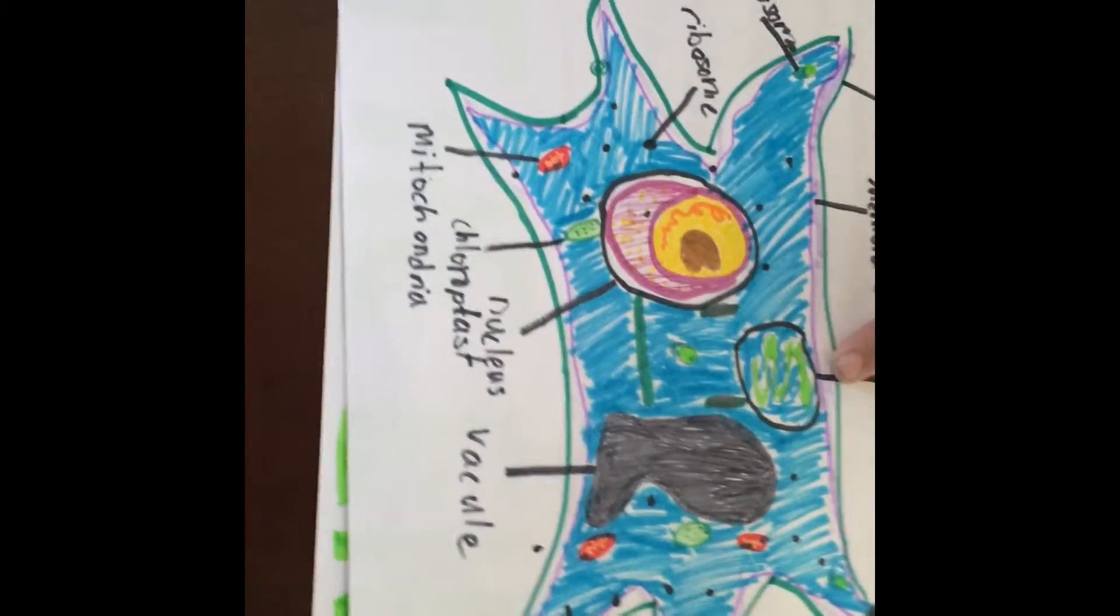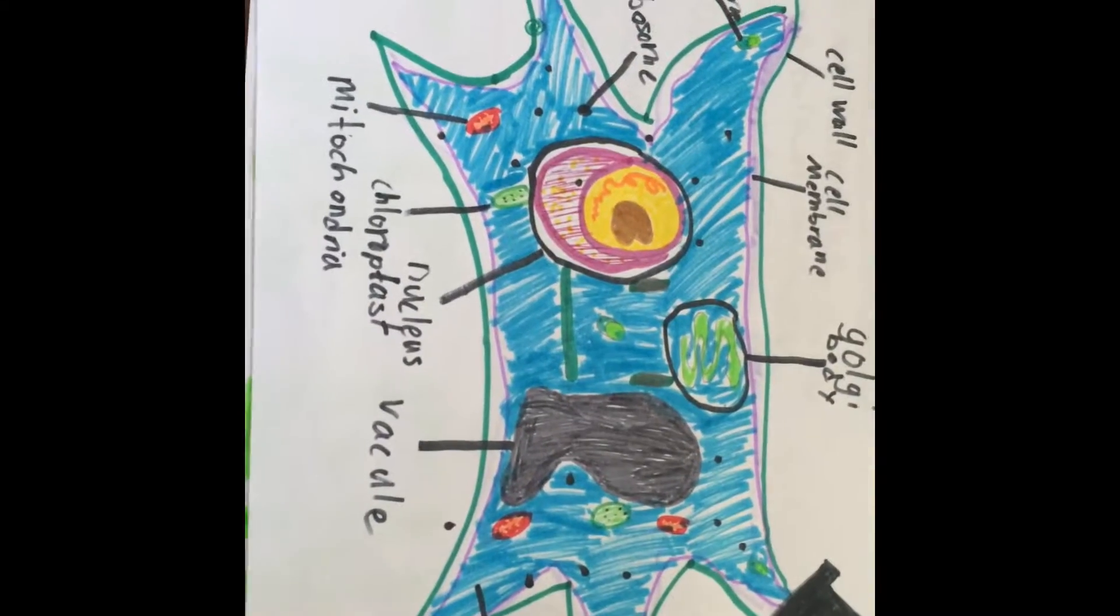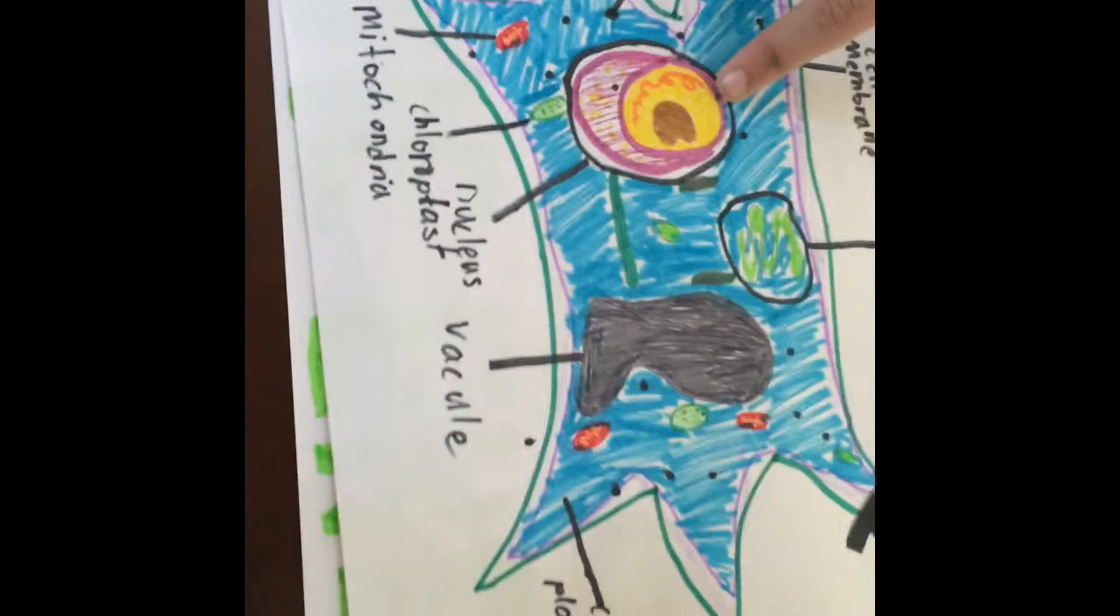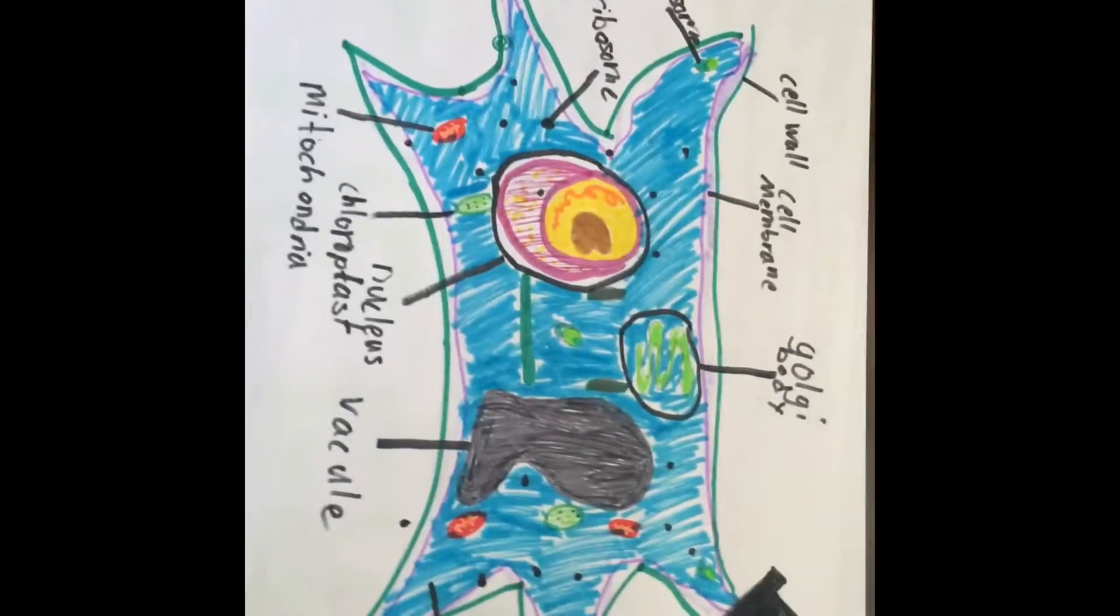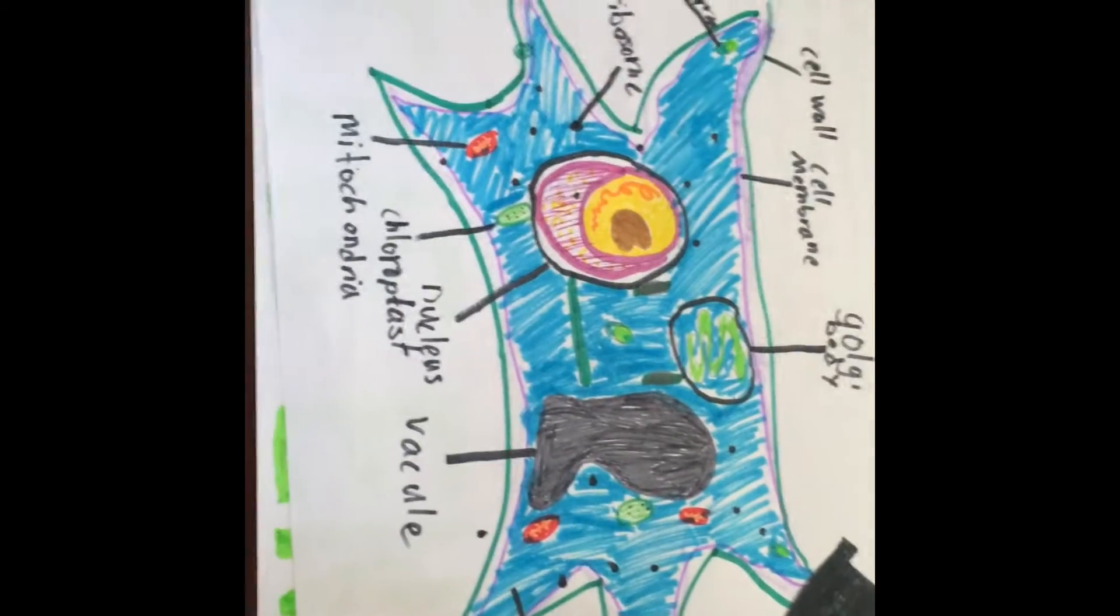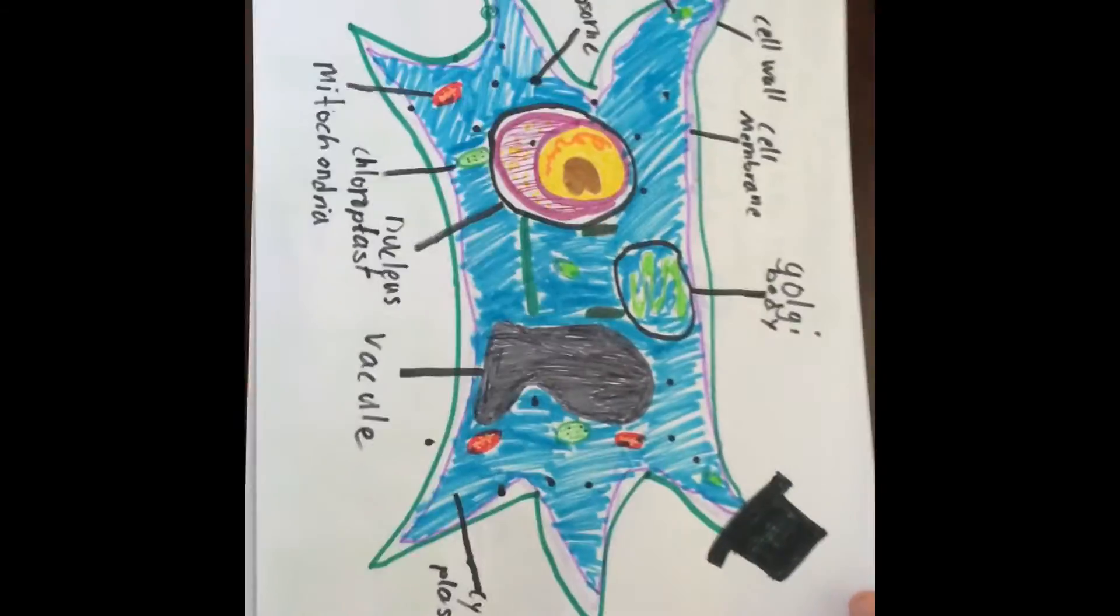The Golgi body groups liquids and proteins, and ships materials all over the cell and out of the cell. The nucleus, one could say, is the most important organelle. It directs all the activity in a cell, and it holds the DNA, the instructions of a cell.